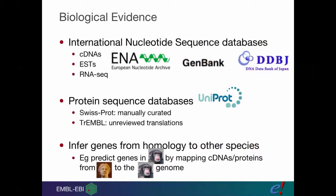The biological evidence we use comes from the INSDC, which is made up of the ENA, GenBank, and DDBJ. People can deposit their cDNAs and expressed sequence tags in there. More recently we've been using RNA-seq data from there as well.